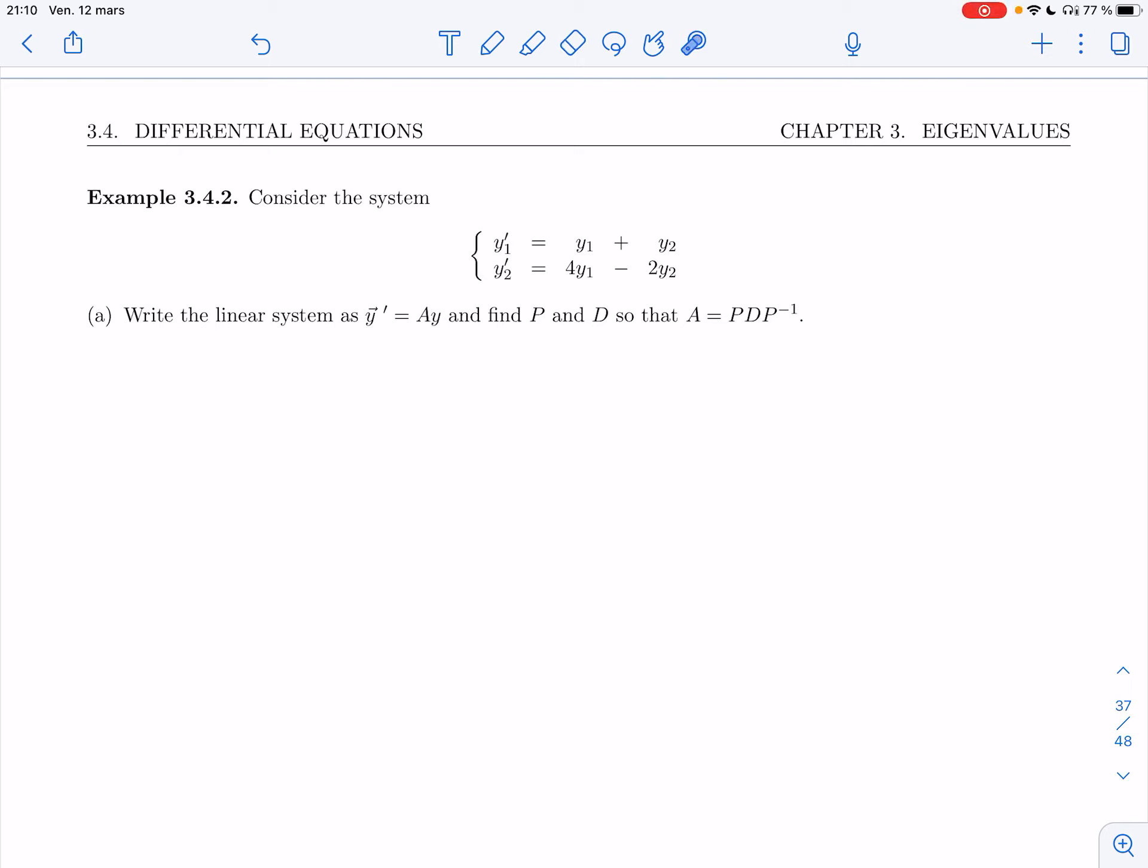All right, so let's try a more general system. Consider the system y prime is y1 plus y2, y2 prime is 4y1 minus 2y2.